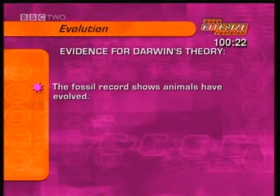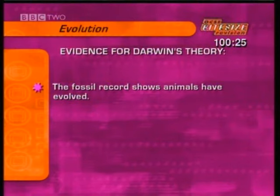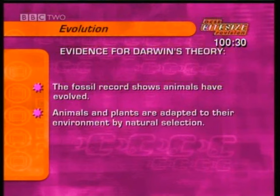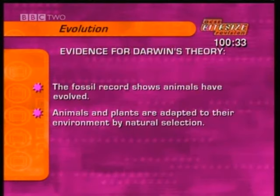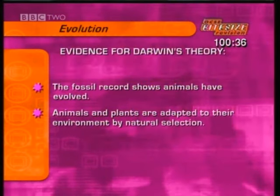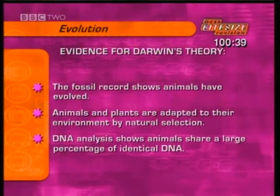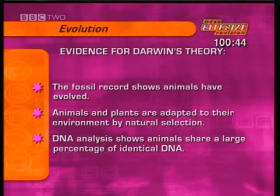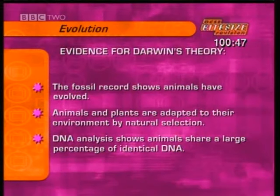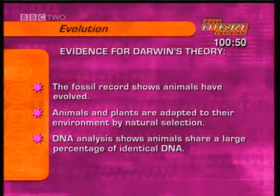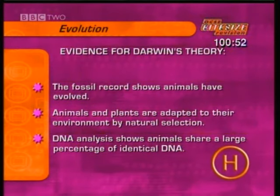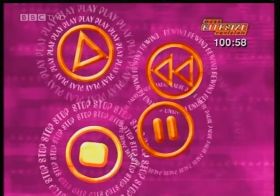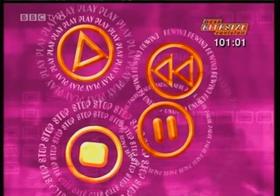The main evidence for the theory of evolution is that the fossil record shows animals have changed and evolved over millions of years. Over time, most animals and plants have become well adapted to their environment by natural selection. DNA analysis shows that all animal species share a large percentage of identical DNA, so they must have common ancestors. There's more about variation, inheritance, and evolution in the Higher Tier Science Program. That's the end of this section on variation, inheritance, and evolution.